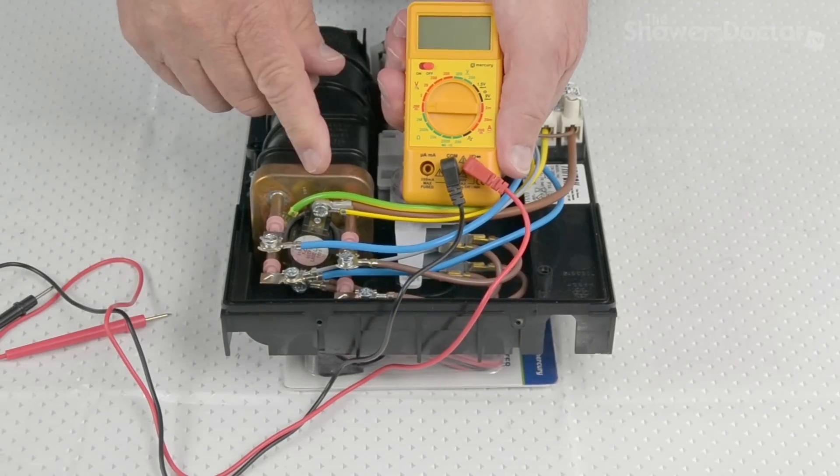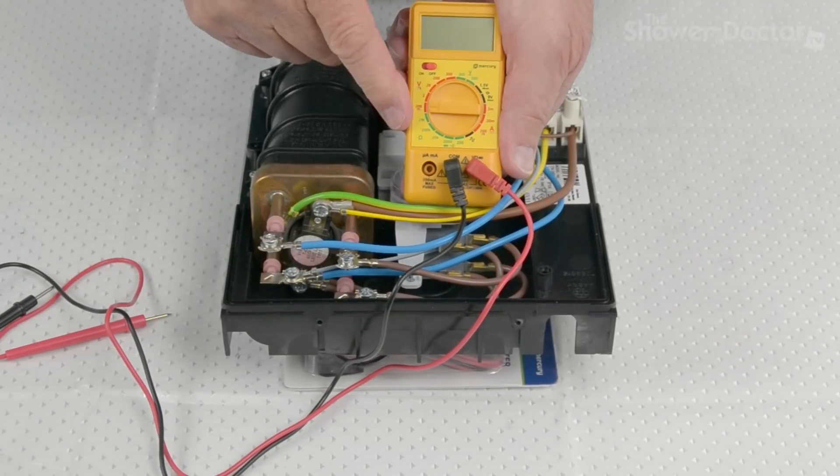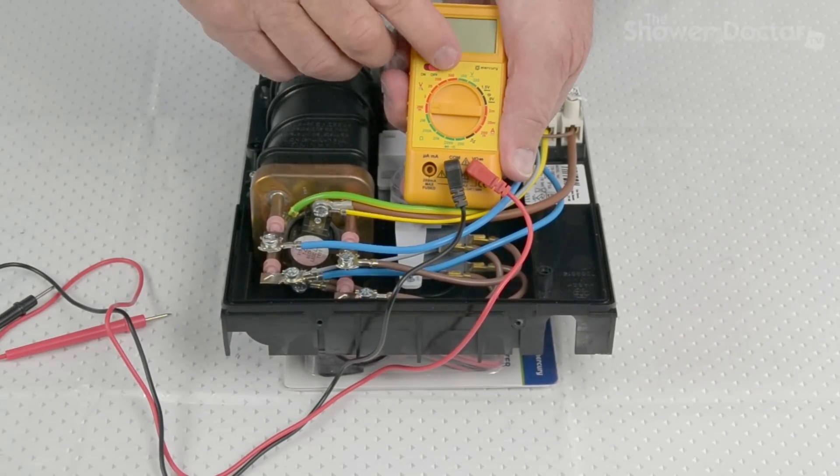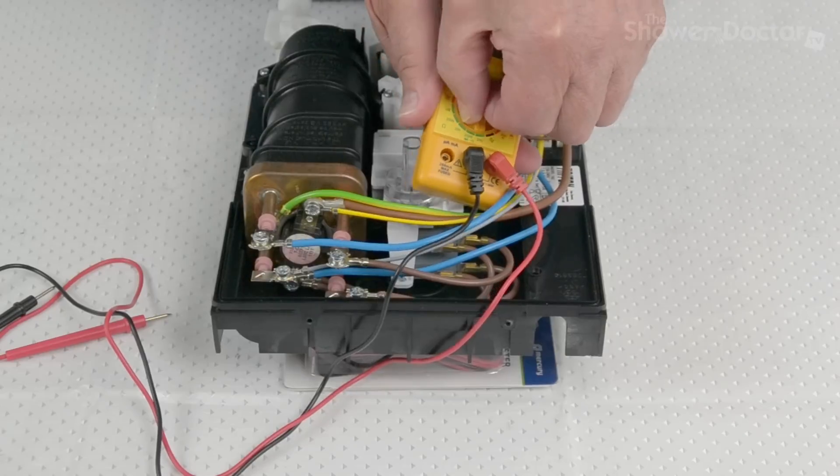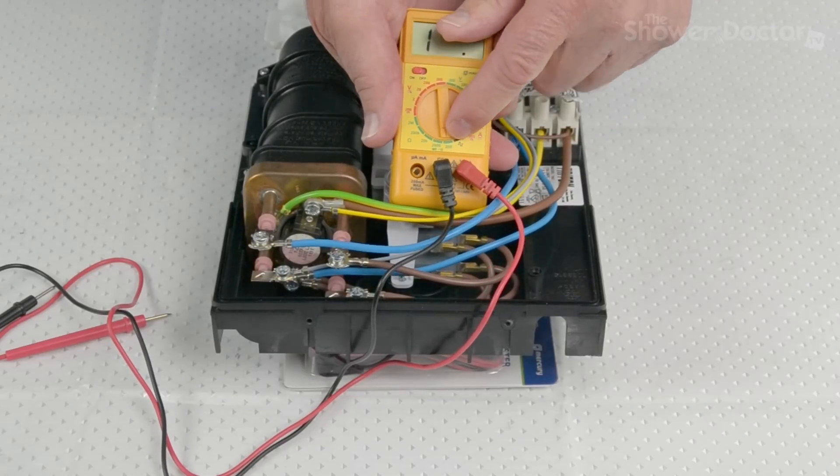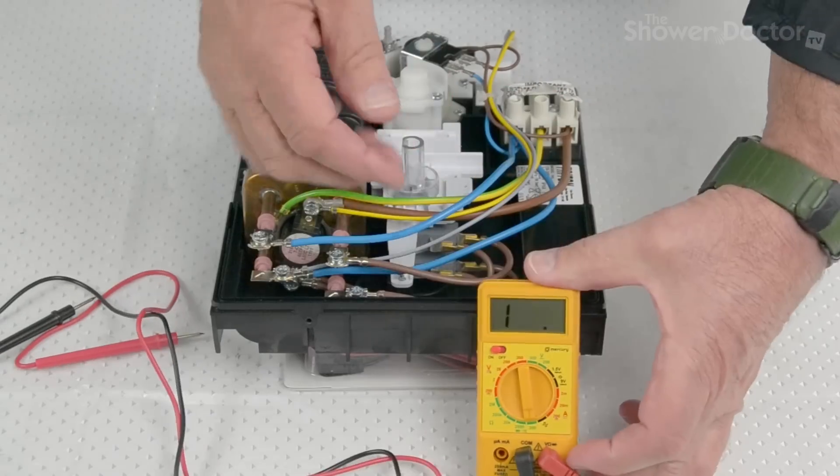In this test, we're going to test the resistance in the elements. So first of all, we need to set the meter. Turn it on. And it's not k ohms this time. It's just set for ohms. So down here, set for 200 ohms. And we test the elements.